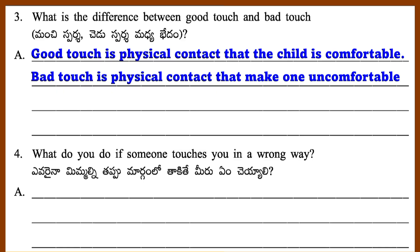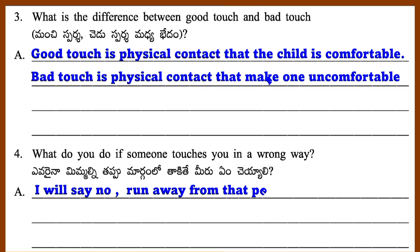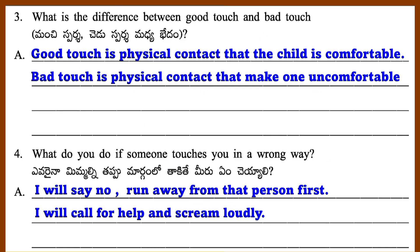Question 4: What do you do if someone touches you in a wrong way? Answer: I will say no. Run away from that person first. I will call for help and scream loudly.